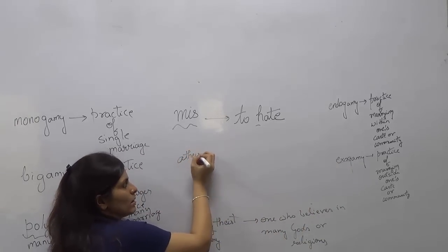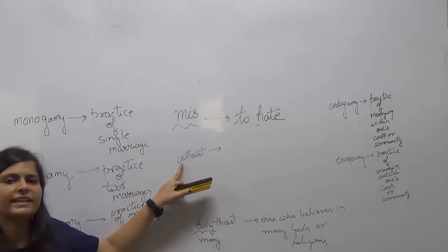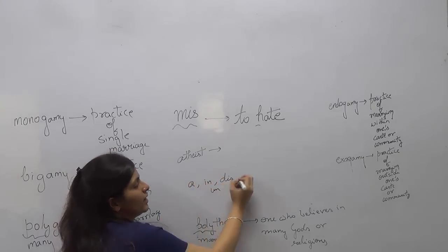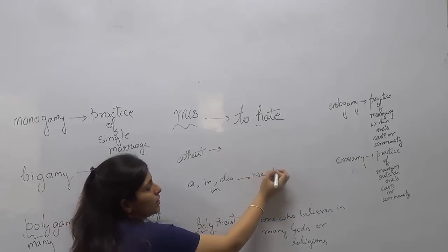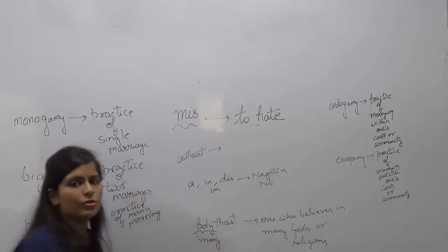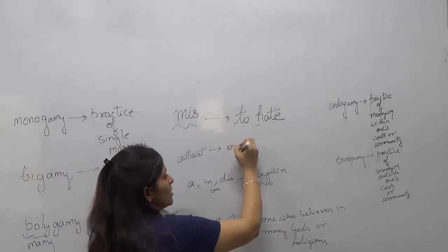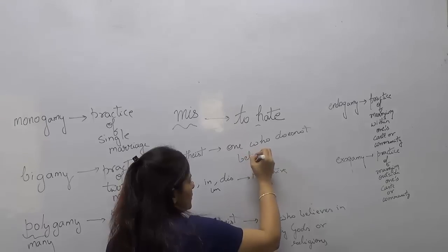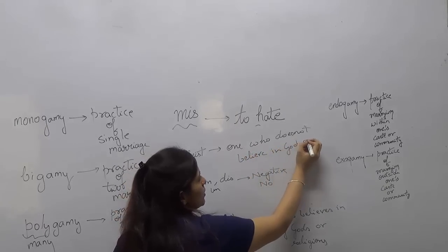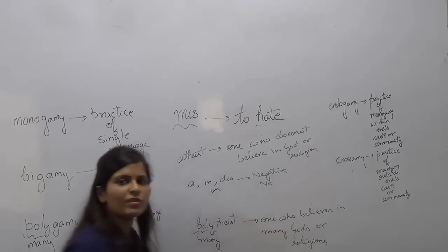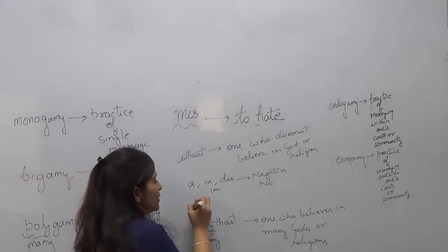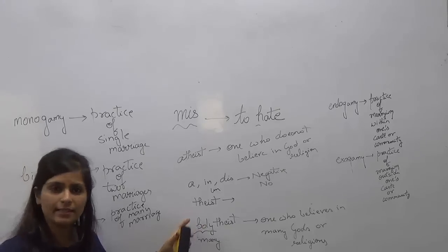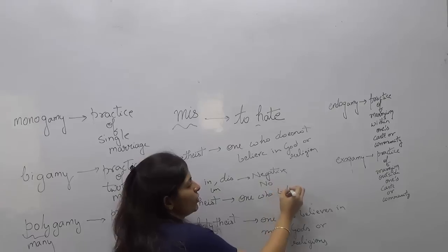Now, 'atheist' — what is the meaning of the word atheist? Whenever 'a' comes before any word, the meaning is negative or no. So atheist means one who does not believe in God or religion. And if the word is 'theist' — without the 'a' — then the meaning is one who believes in God or religion.